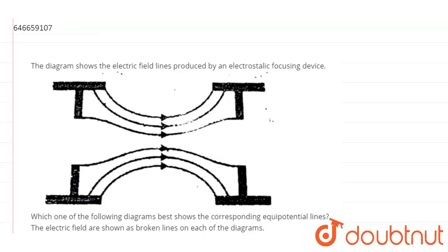A diagram shows the electric field lines produced by an electrostatic focusing device. Which one of the following diagrams best shows the corresponding equipotential lines?